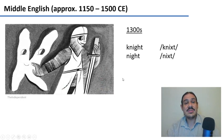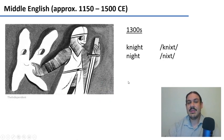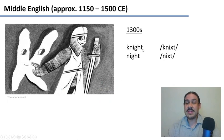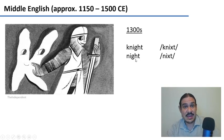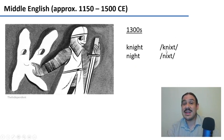Likewise, certain sounds began to disappear. For example, words that must have been pronounced something like 'kniht' and 'niht' — where the gh represented an actual sound — started to be phased out of the language, so that they came to be pronounced 'knight' and 'night' as we know them today.